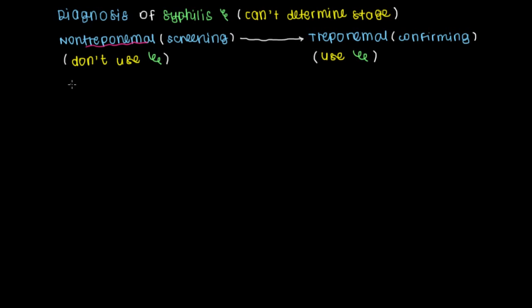The first non-treponemal test is kind of a mouthful. It's referred to as the venereal disease research laboratory test, or VDRL test. The way it works is that you get a sample of the patient's blood and you add that to this well right here.